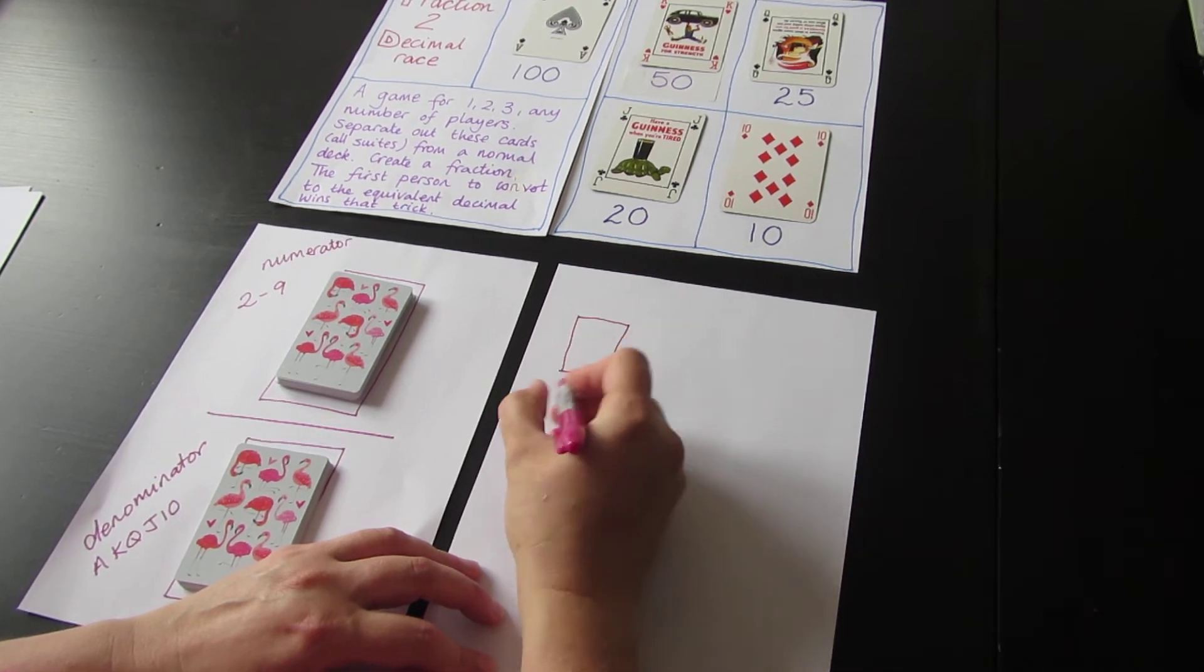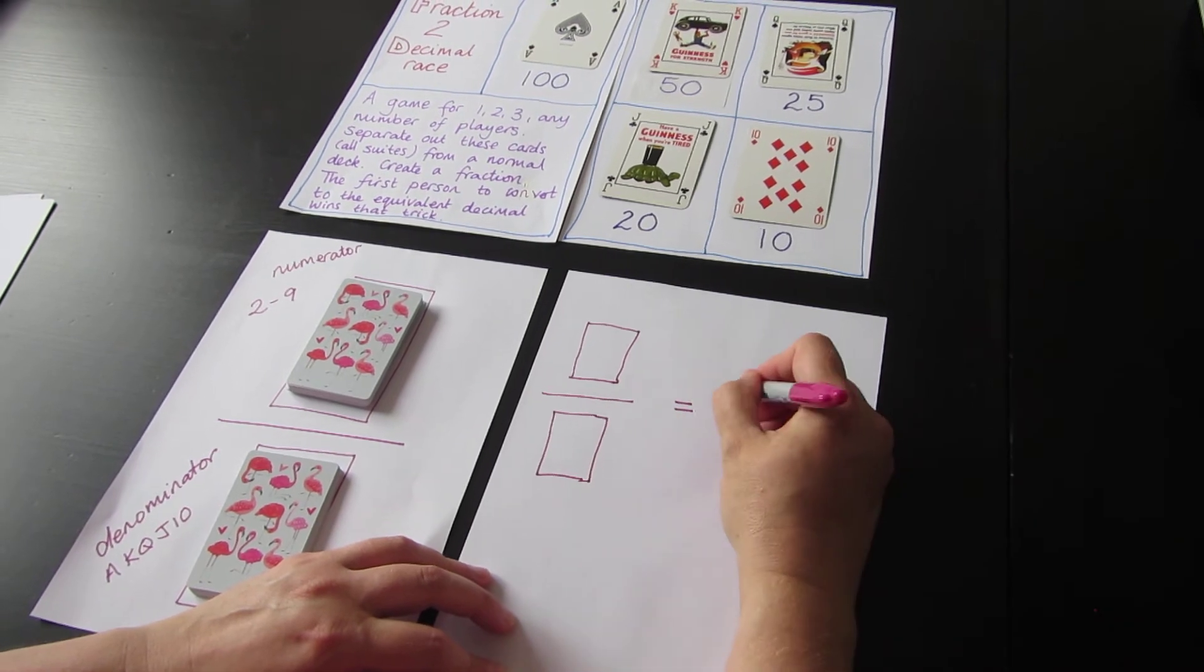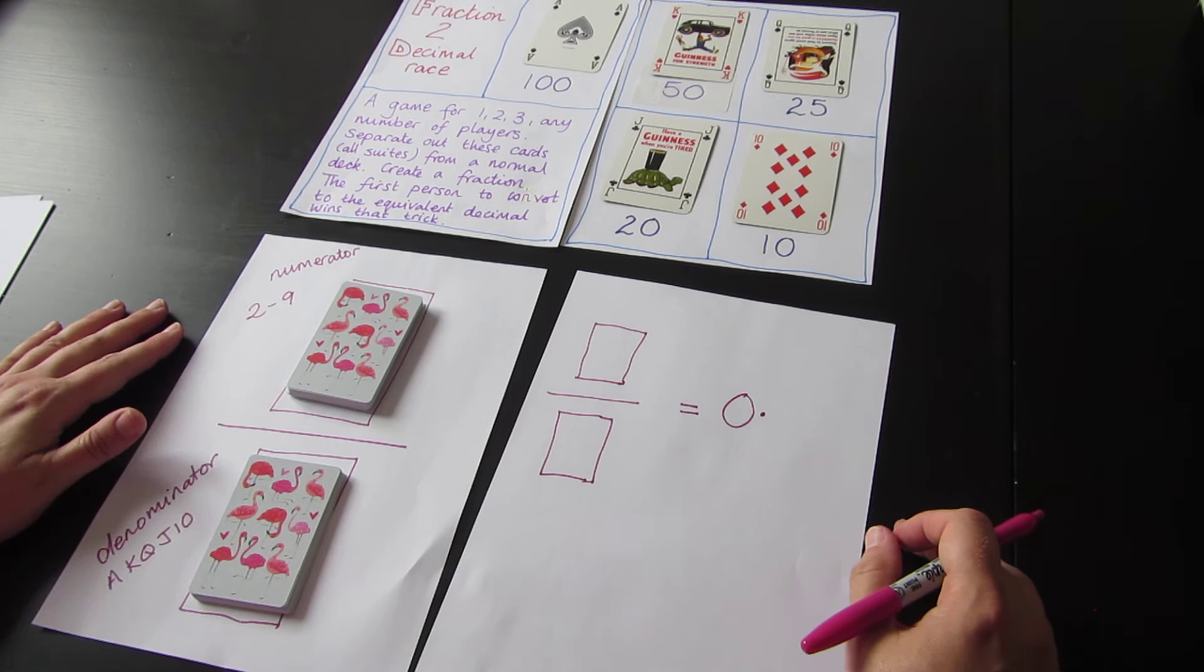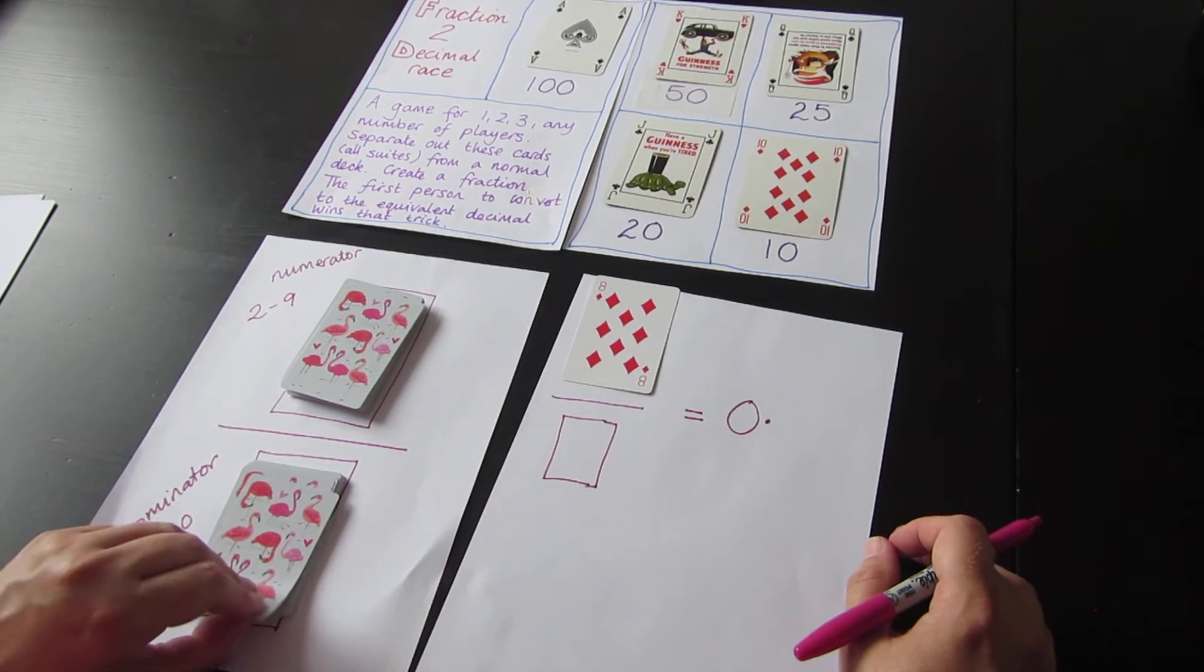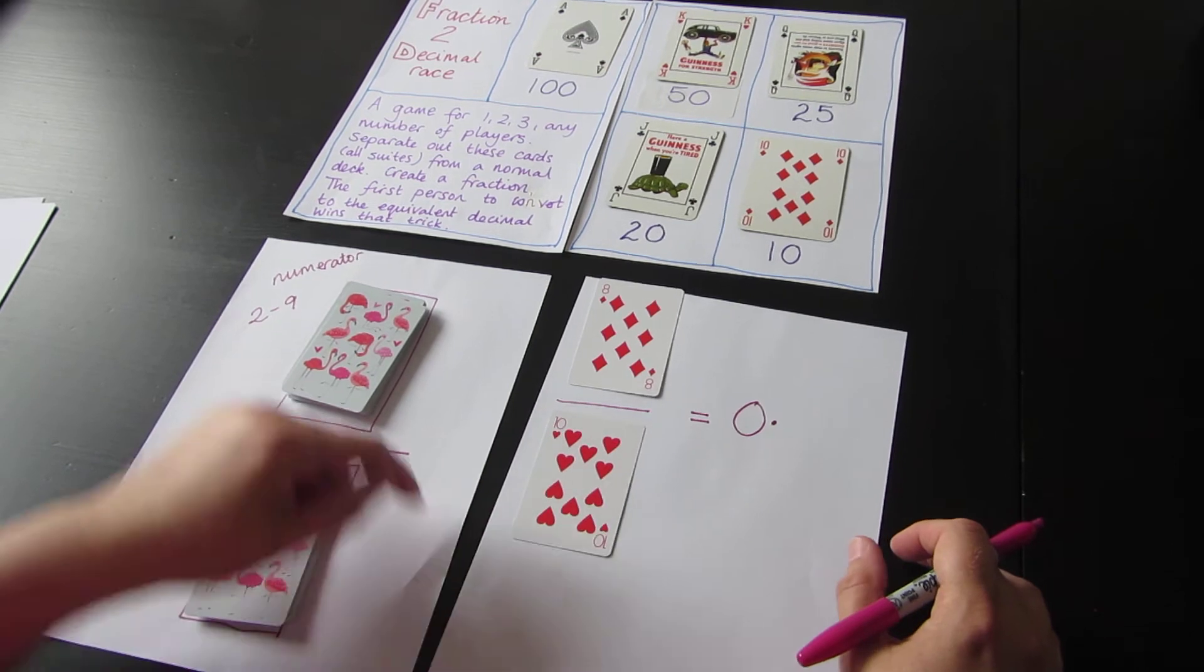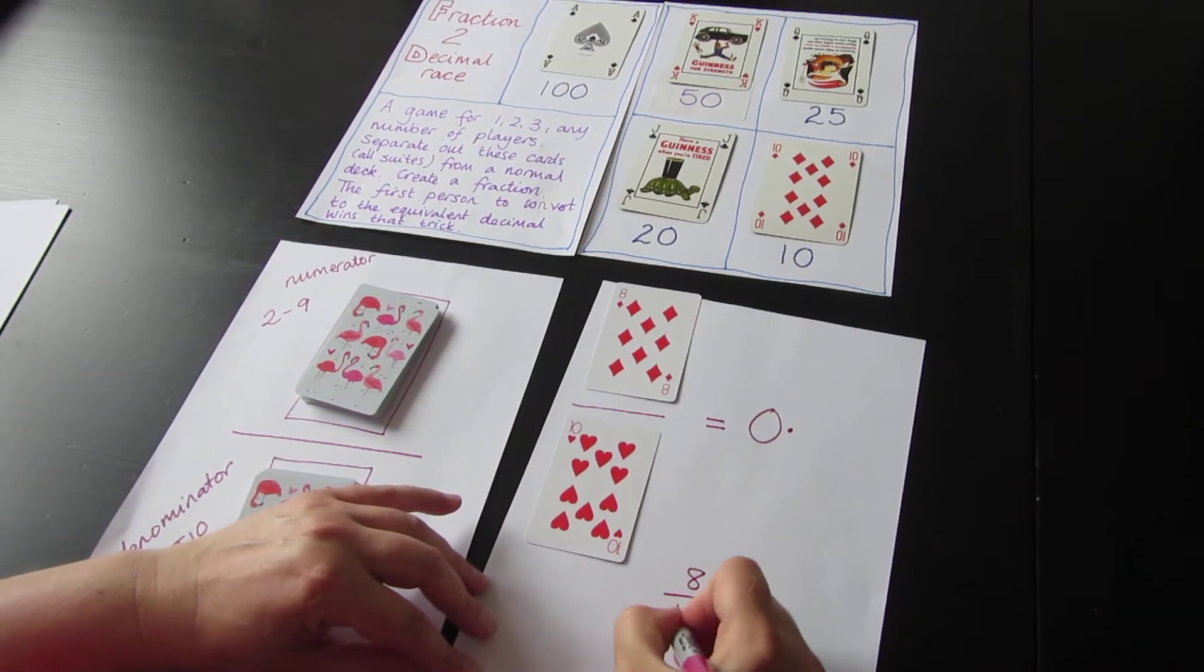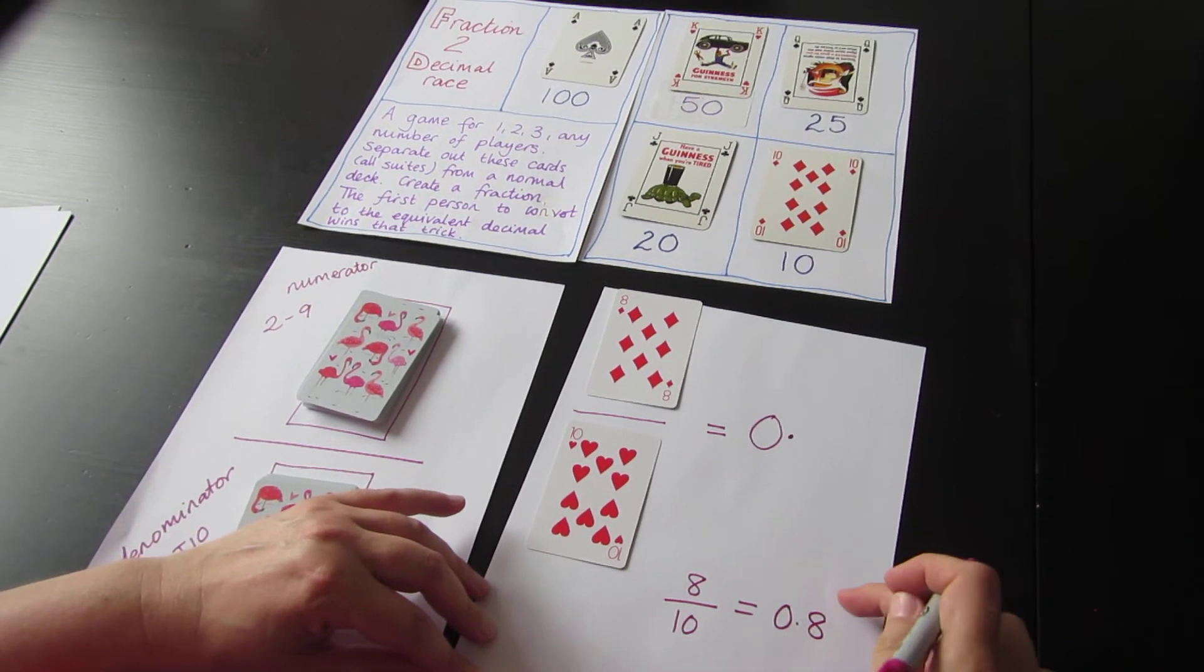Let me show you what I mean. Turn over the numerator - I have 8. Eight tenths. That's an easy one: 0.8. The tenths column is the first column after the decimal place. That was quite easy. How about we have another one? Hoping for something a little more tricky this time.